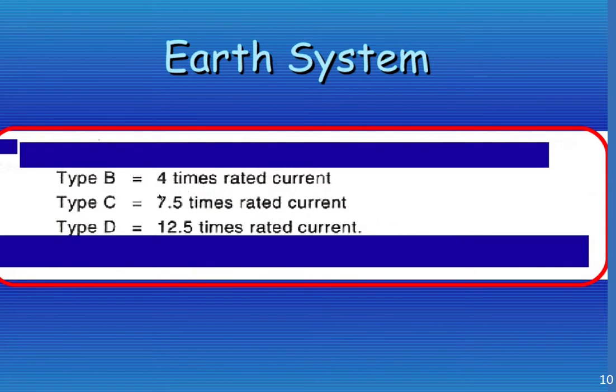So again, here's our different types of characteristic curves. There's a type B curve, a type C curve, and a type D. Type B needs to be four times rated current to trip in the appropriate amount of time. Type C needs to be seven and a half times the rated current, and type D needs to be twelve and a half times the rated current.